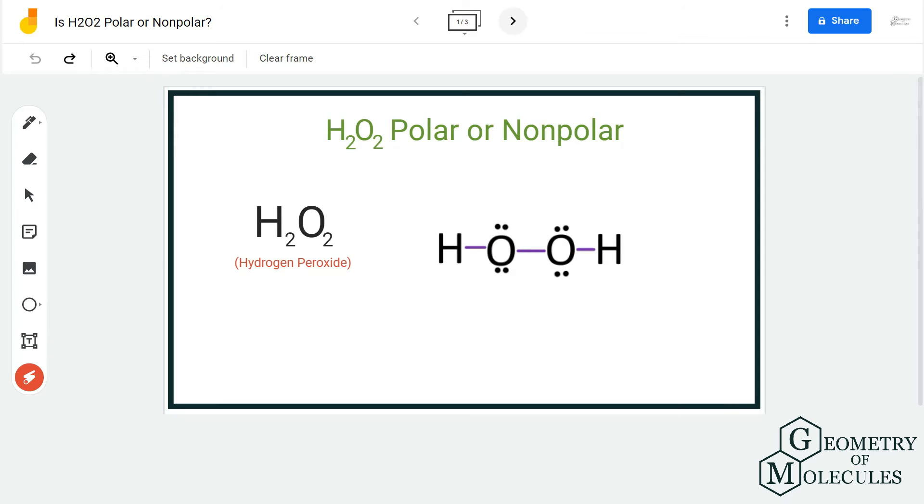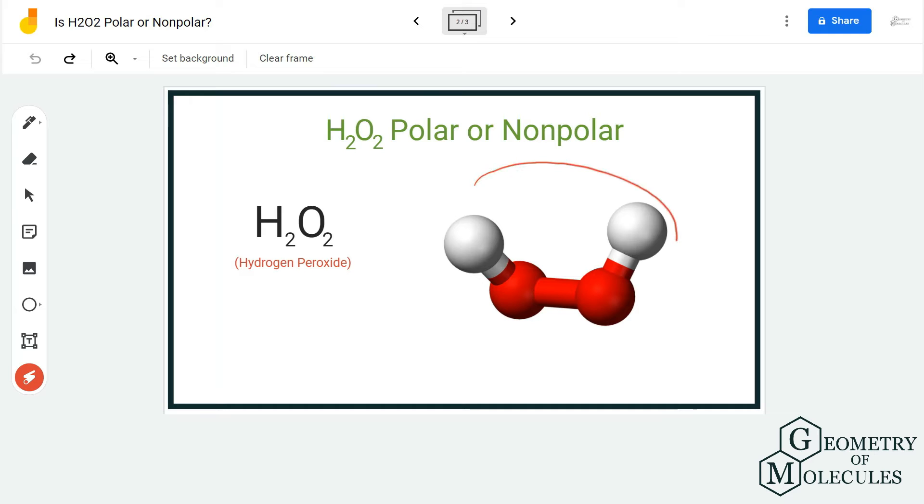If you look here, the shape is bent and it has a tetrahedral geometry because of the arrangement of electrons. Due to the lone pairs on the oxygen atoms, it causes a bent shape.